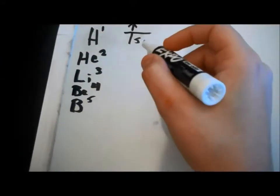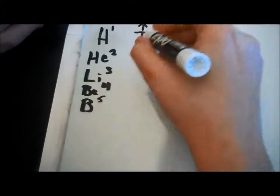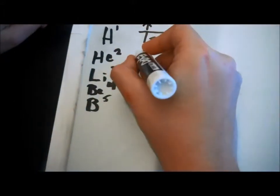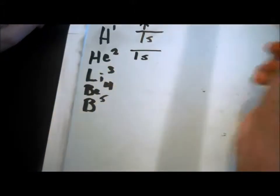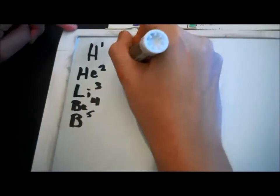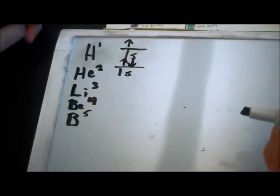Next is helium. And it has 2 atoms. So, that's still on the 1s level. But this time, you have 2 electrons. And you always want to put them facing opposite directions. Like this. Or else, electrons don't want to work. Like batteries.